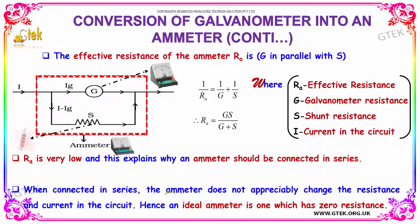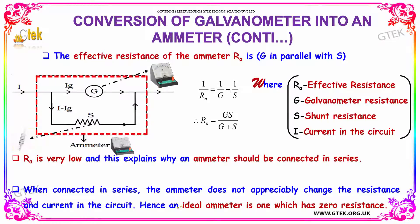When connected in series, the ammeter does not appreciably change the resistance and current in the circuit. Hence, an ideal ammeter is one which has zero resistance.